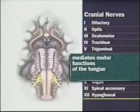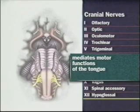Cranial nerve 12, the hypoglossal nerve, mediates motor functions of the tongue, which in turn affect articulation of words. Inspect the patient's tongue as it lies on the floor of his mouth and observe for fasciculations — there should be none. Ask the patient to stick out his tongue and note any asymmetry, deviation, or atrophy. The tongue should protrude straight out.